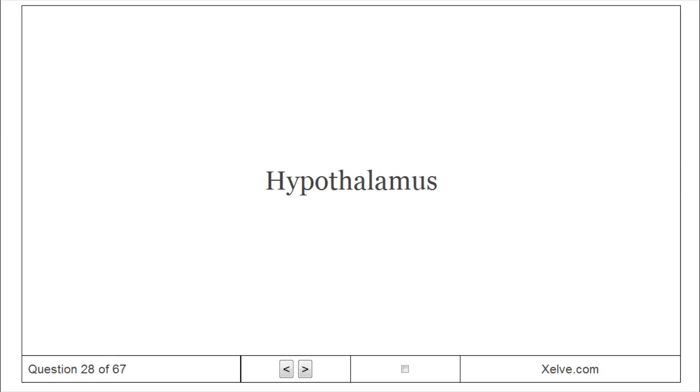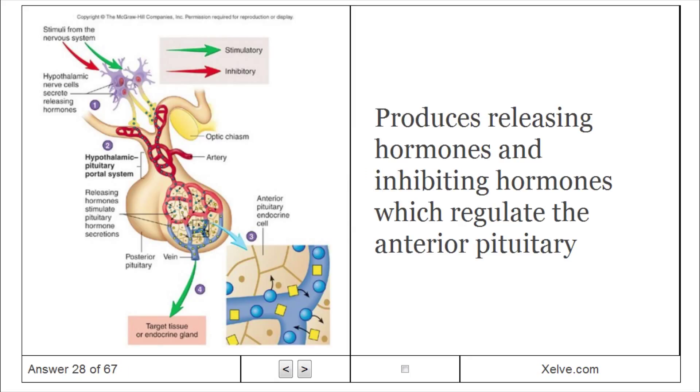Hypothalamus produces releasing hormones and inhibiting hormones which regulate the anterior pituitary.